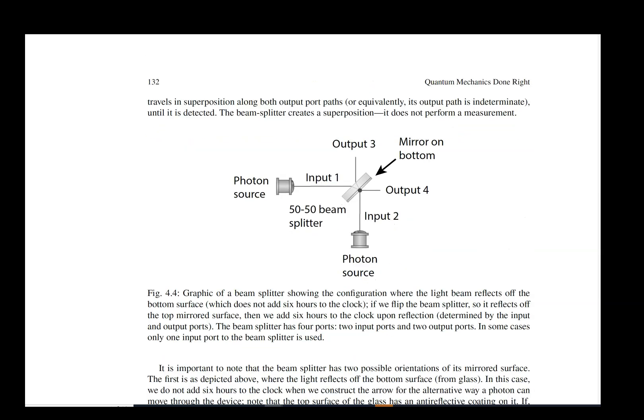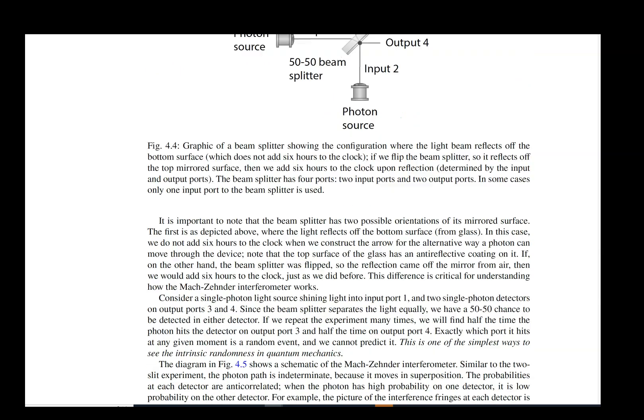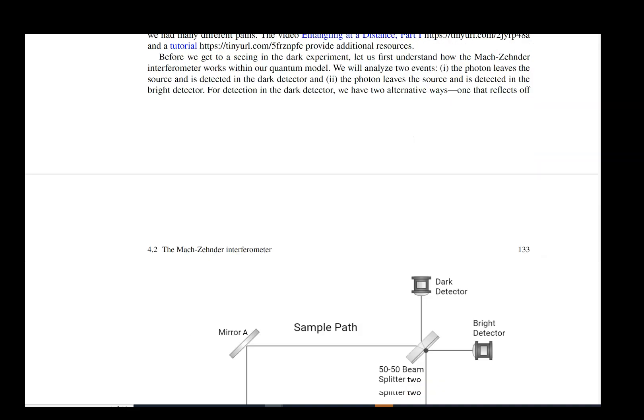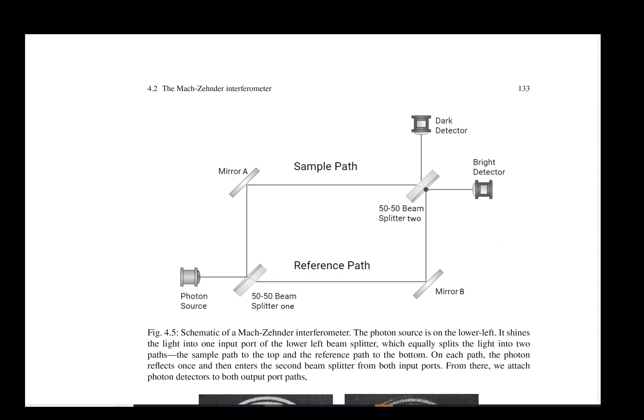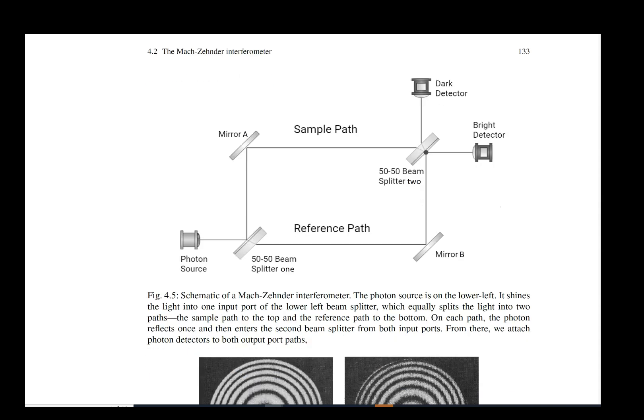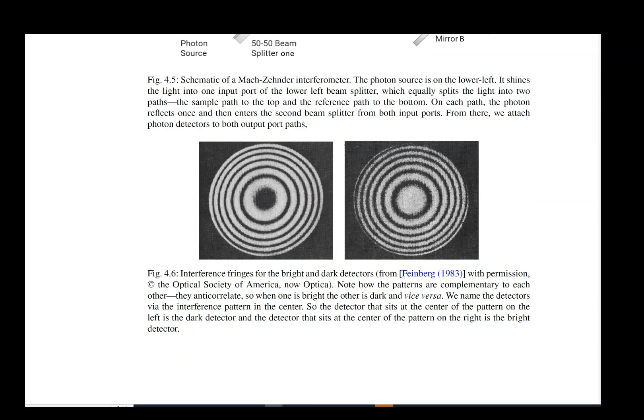A much more efficient way of doing it is with a Mach-Zehnder interferometer. To understand a Mach-Zehnder interferometer you need to understand its components and one of them is a beam splitter. Beam splitters essentially look like partially reflecting sunglasses. You get interference patterns that are complementary to each other at the two different detectors, one called the bright detector, the other called the dark detector.